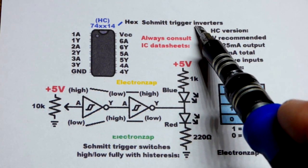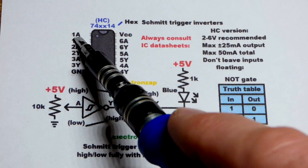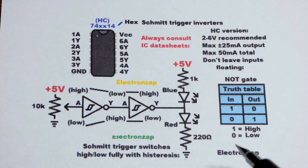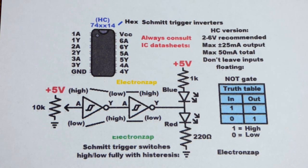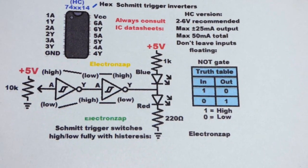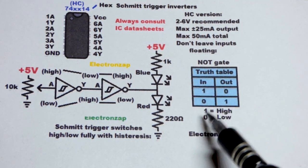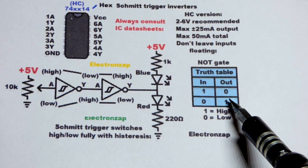Inverter means that whatever we give the input - high or low, 1 or 0, 5 or 0 volts within the range I should say - whatever we give in, the output will be the opposite. So 1 in will get 0 out. 0 in will get 1 out.